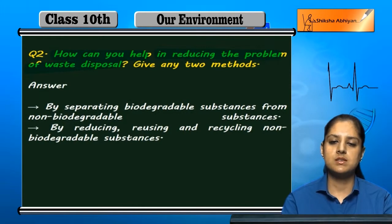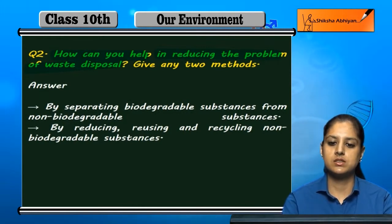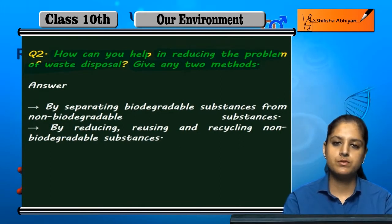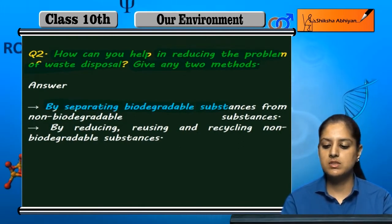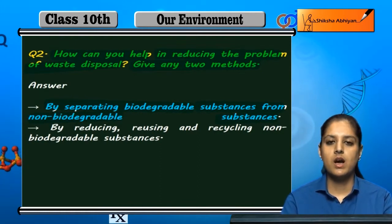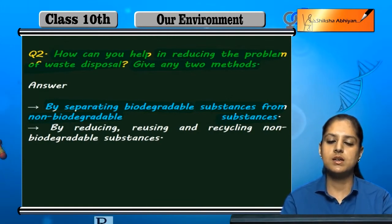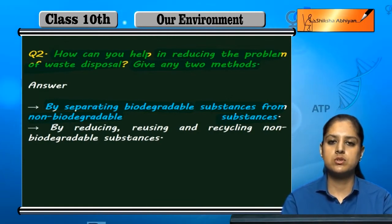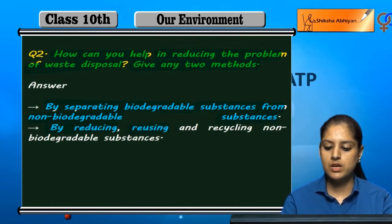Waste ko dispose karne ki jo problem hai, usko reduce karne mein kaise help ki ja sakti hai? Uske liye apko do methods batane hain. First is by separating biodegradable substances from non-biodegradable substances. Agar hum biodegradable aur non-biodegradable substances ko alag-alag kar dein, to waste disposal ki jo problem hai woh solve ho sakti hai.